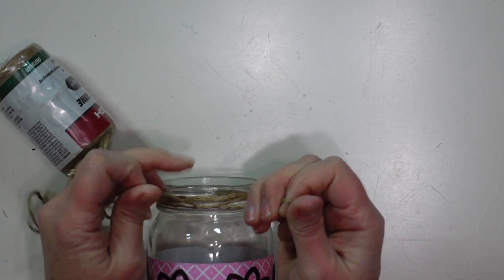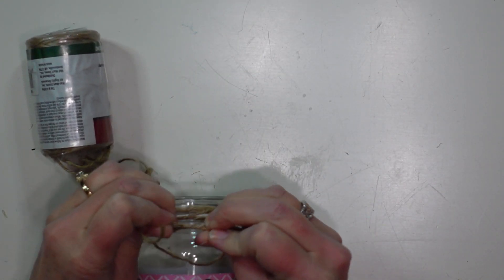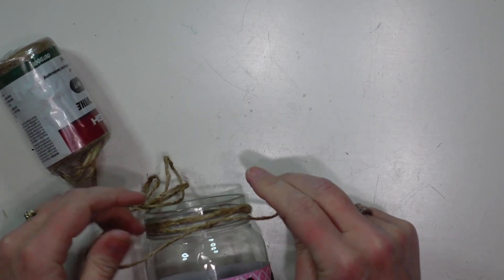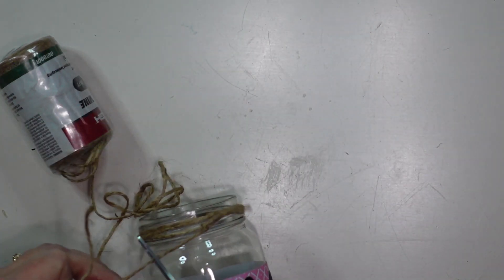And to finish off my jar I am going to just wrap some jute twine around the top about three times and tie a knot and then trim off the ends. And then I will repeat this with the other two jars.